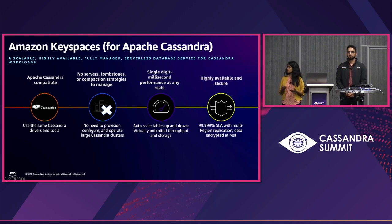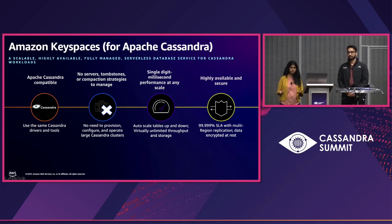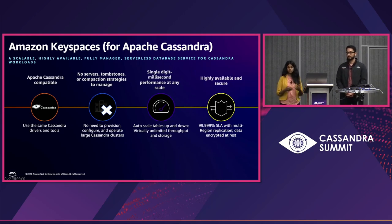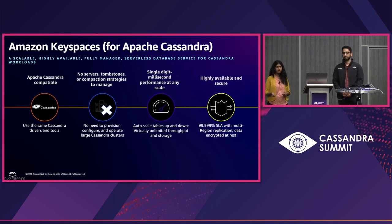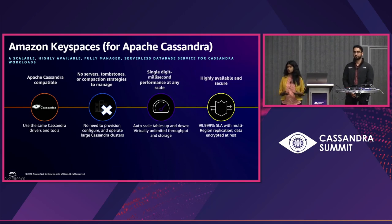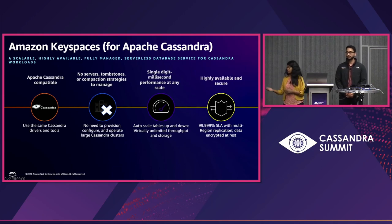That means you can use your CQL code to manage your tables, create tables, read and write data — anything you can do with regular Cassandra. You can use your regular drivers and developer tools you already use. Using Amazon Keyspaces is as simple as changing your Cassandra endpoint to the Amazon Keyspaces service endpoint, and you can use your Cassandra migration tools to migrate data to Amazon Keyspaces.